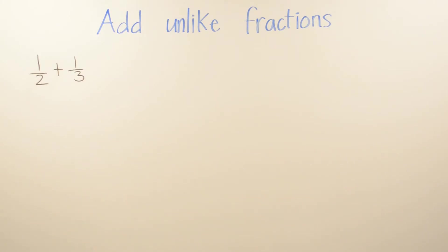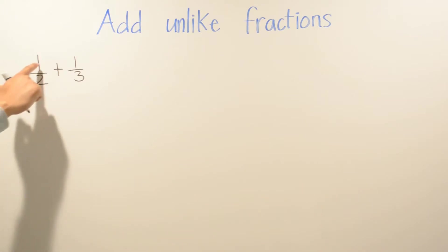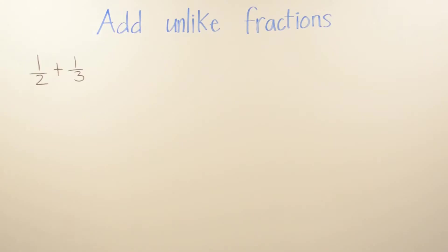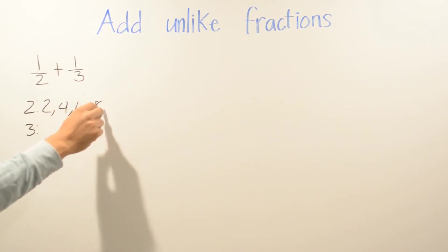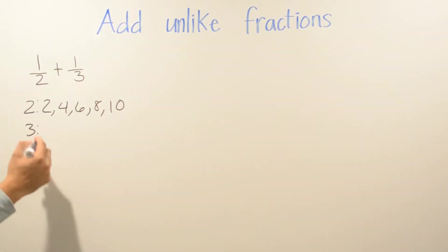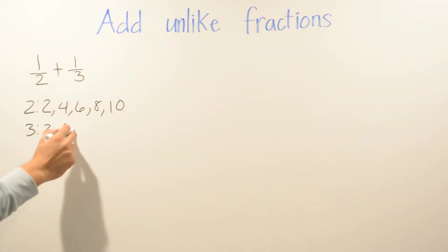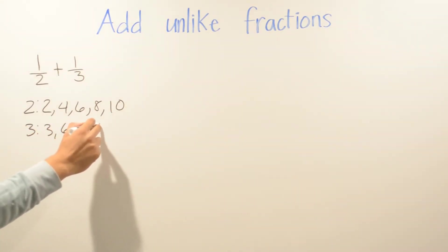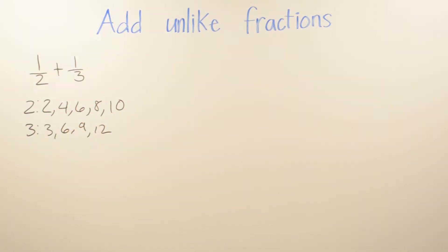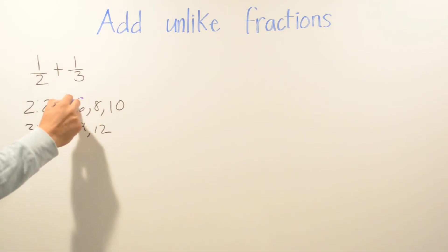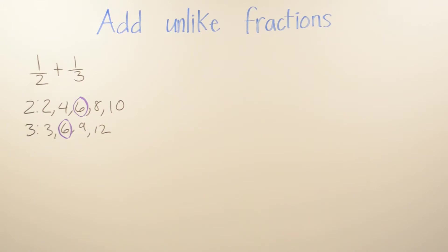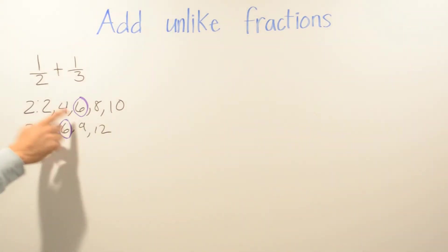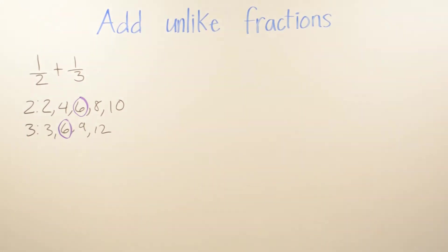So for one-half plus one-third, we need to find the least common multiple. We write out multiples of 2: 2, 4, 6, 8, 10. Then we do the same for 3: 3, 6, 9, 12. We already found it — 6 appears in both lists. For the number 2, it took us three steps; for the number 3, it took us two steps.